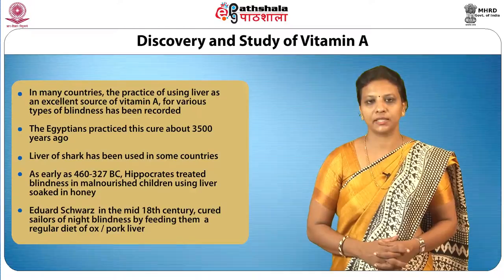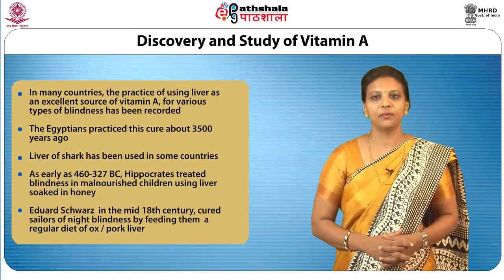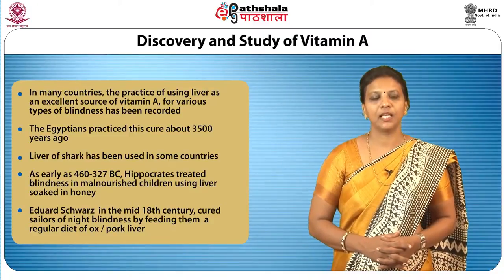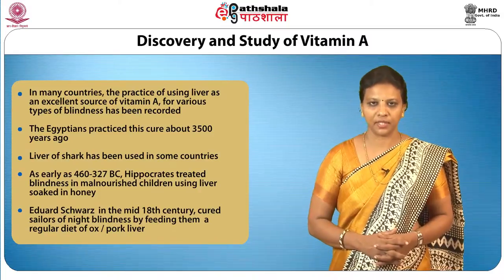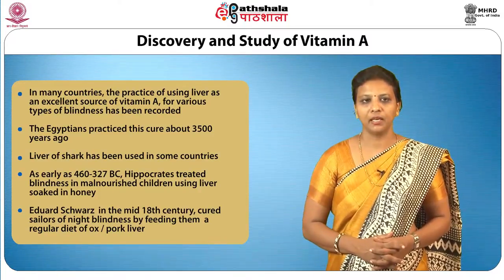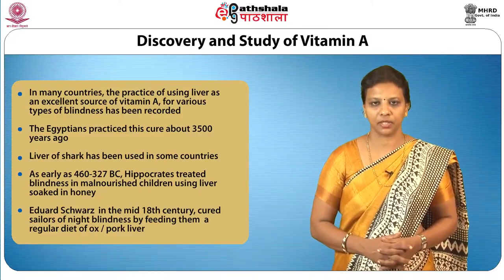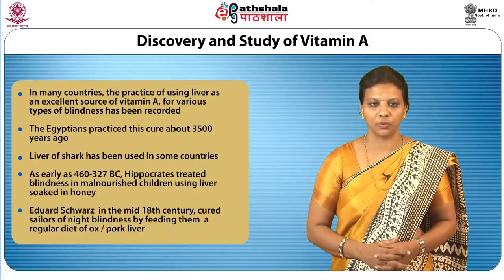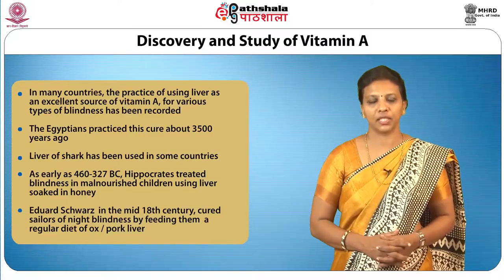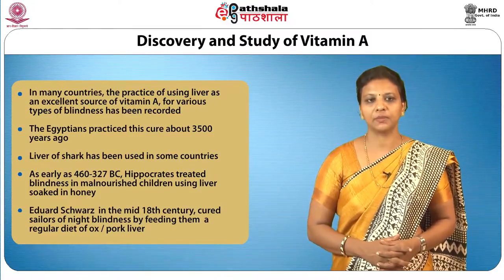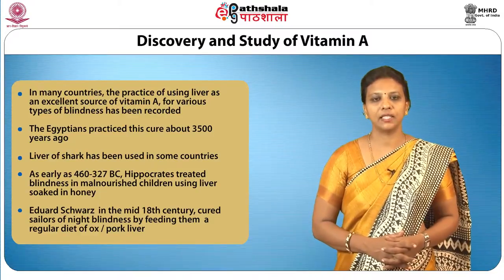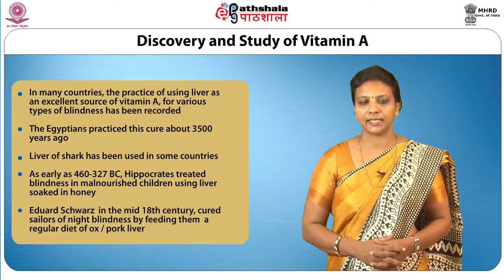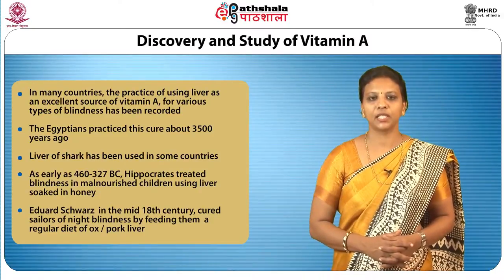Other scientists also indicated the role of vitamin A in cell differentiation, bone development, reproduction and immune system function. In many countries, the practice of using liver — an excellent source of vitamin A — for various types of blindness has been recorded. The Egyptians practiced this cure about 3500 years ago. Liver of shark has been used in some countries. As early as 460 to 327 BC, Hippocrates treated blindness in malnourished children using liver soaked in honey.